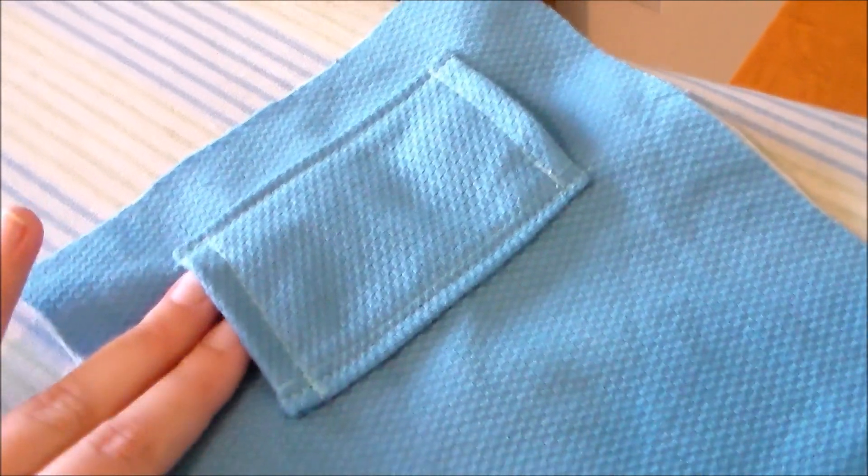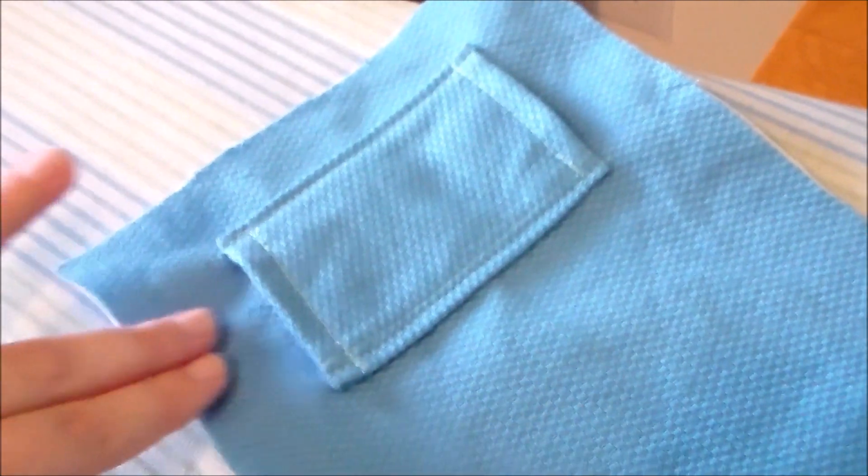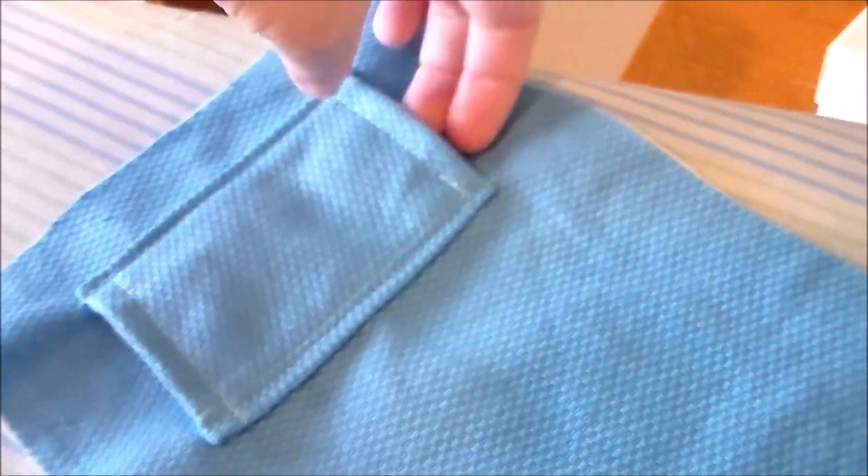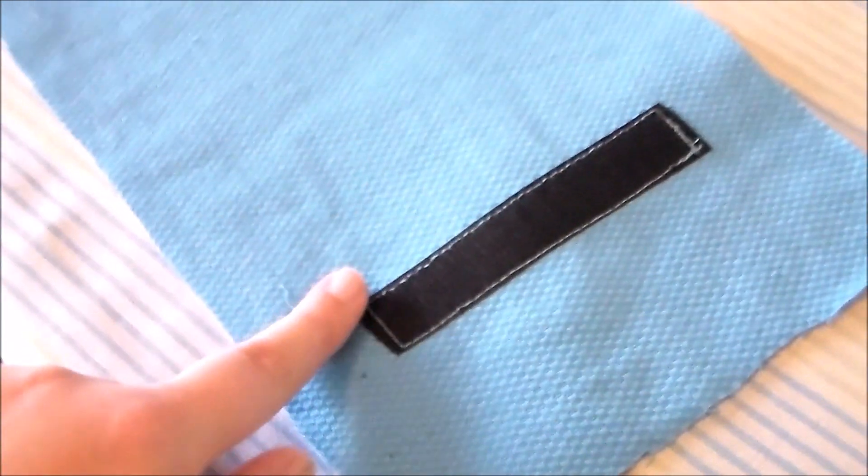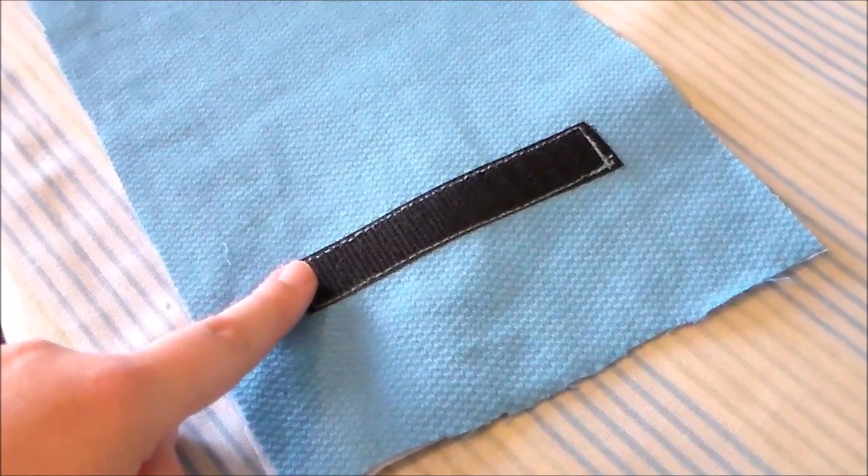Sew the rectangle to the top of the pouch along the top and along the bottom of the rectangle so that the belt can slide through the channel. We're also going to sew some velcro onto the bottom of the rectangle. This is so that the flap can close shut.